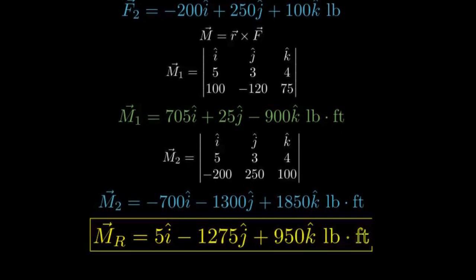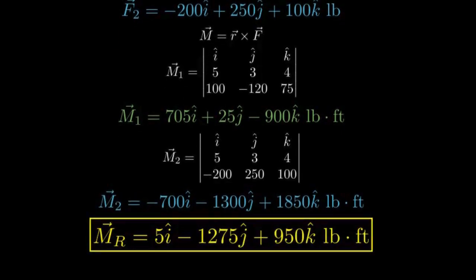The resultant moment is the sum of M1 and M2, which gives us 5i minus 1275j plus 950k pound-feet. And that's our final answer.